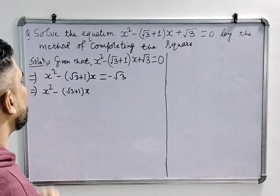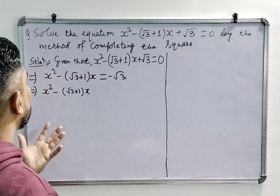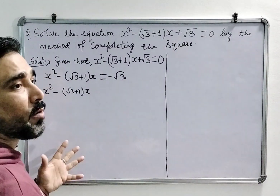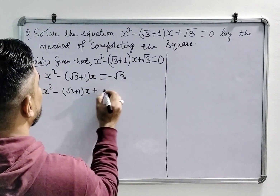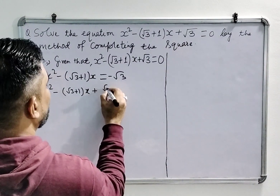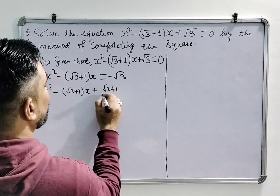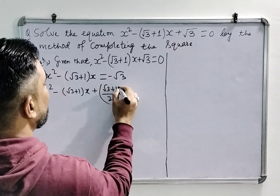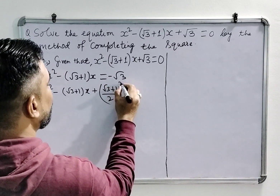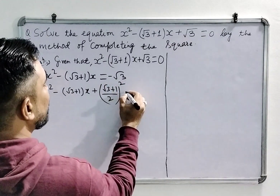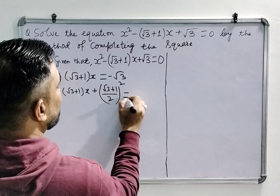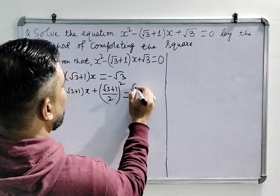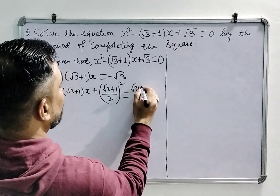Then we add the square of the half of the coefficient of x on both the sides. So the half of the coefficient of x will be (√3 + 1)/2, squared. So we have to add that to the RHS side also.